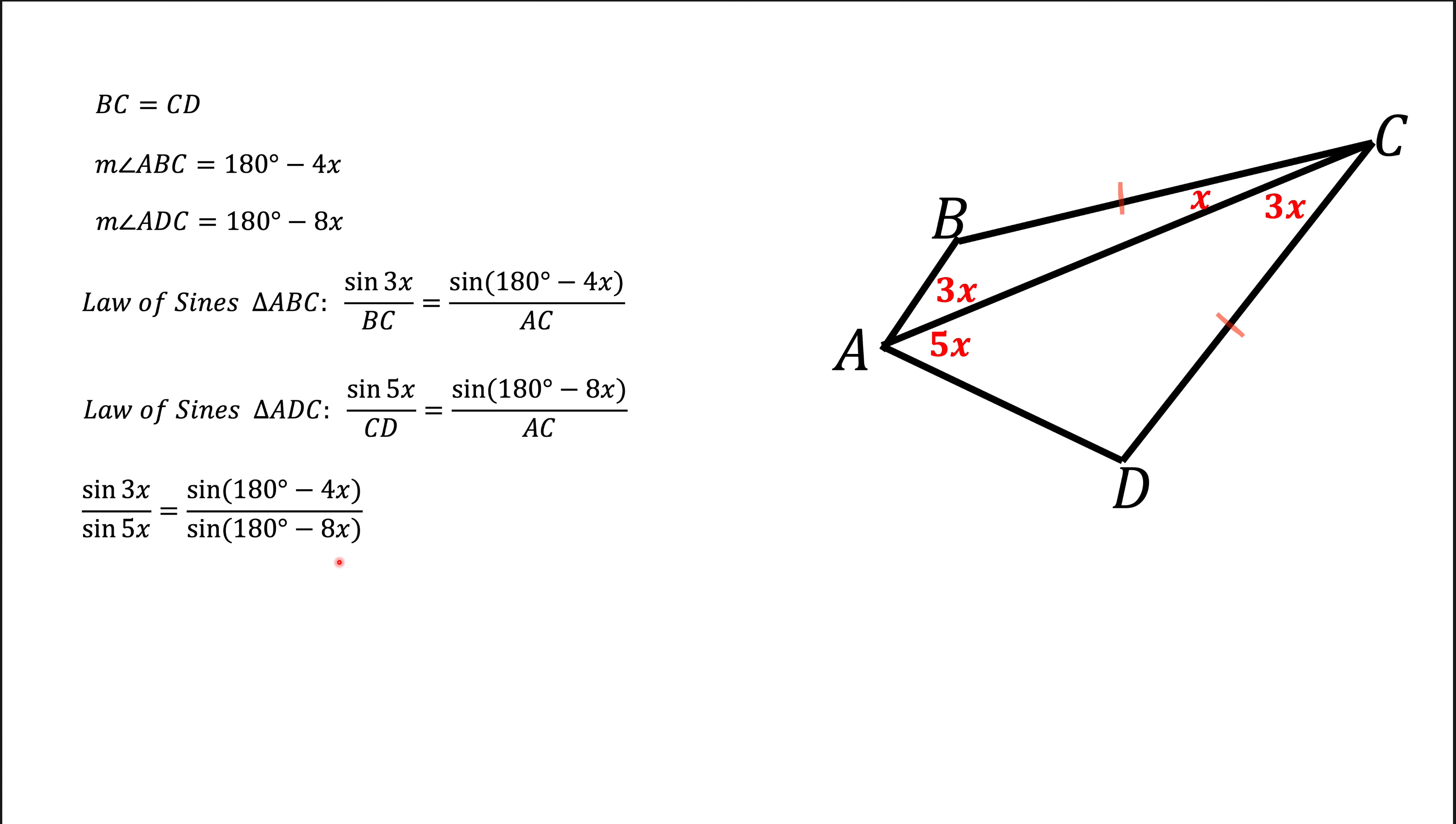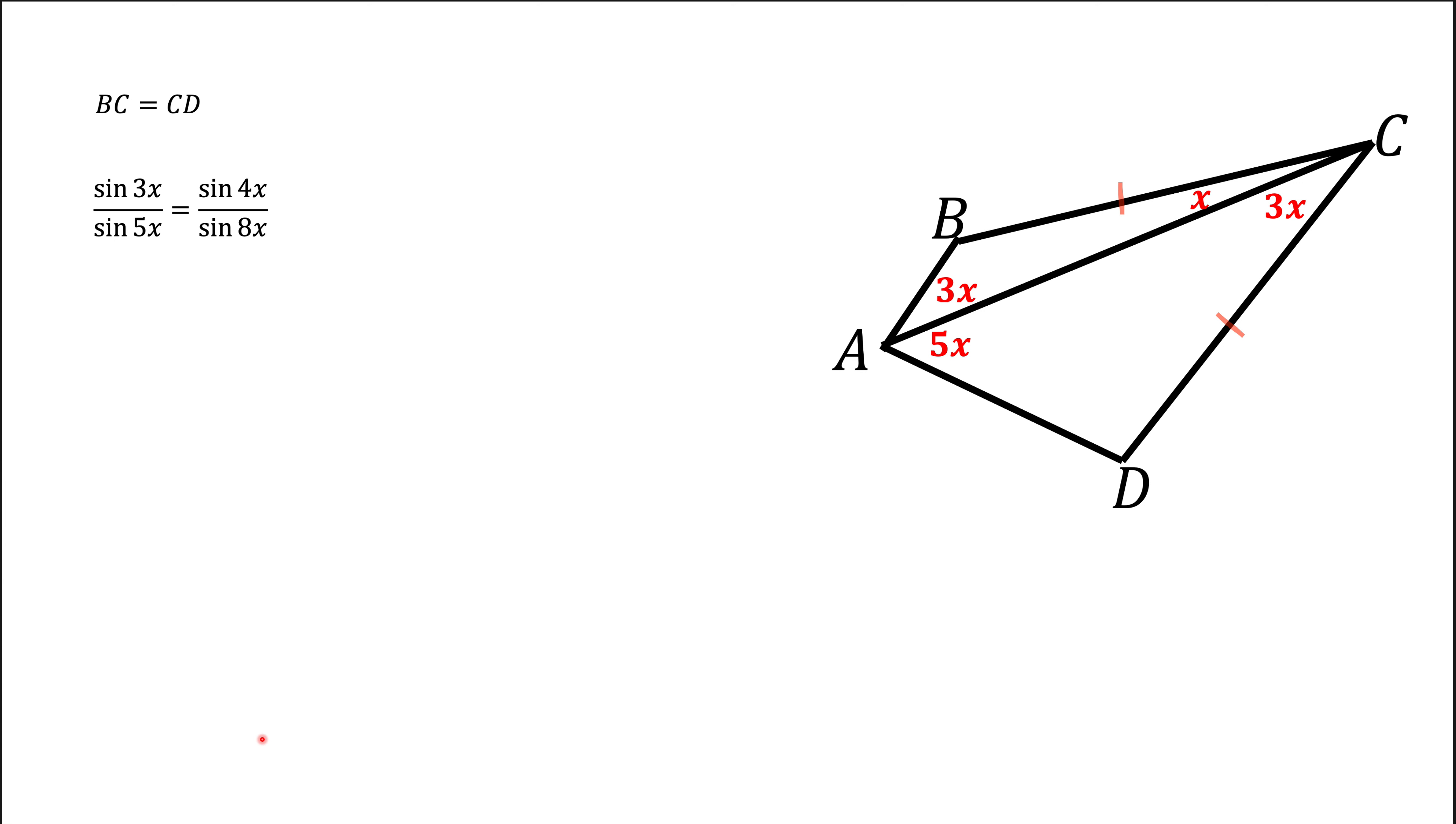The first thing we're going to do is get rid of sine 180 minus something, using the formula that sine of 180 minus something is simply sine of that something. So in the top we're going to have sine of 180 minus 4x is sine of 4x. At the bottom, sine of 180 minus 8x will be sine of 8x.